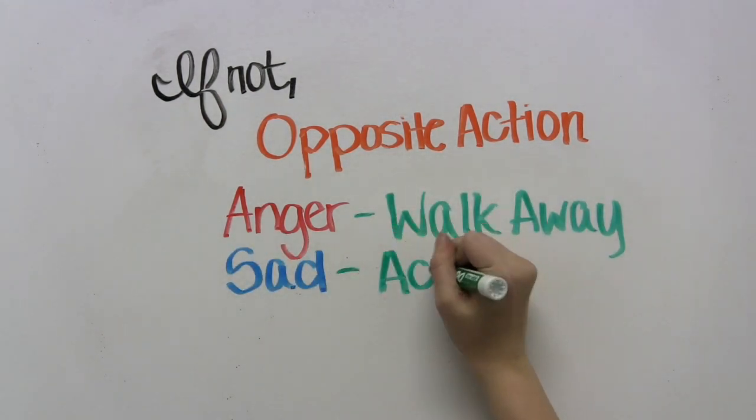To act opposite, Marie needs to get out of bed, stop thinking about John, and get active.